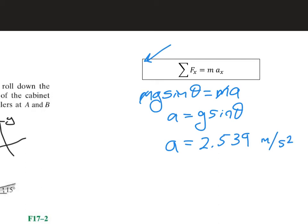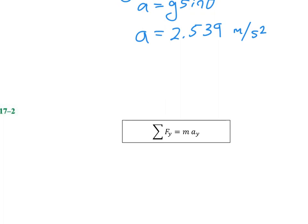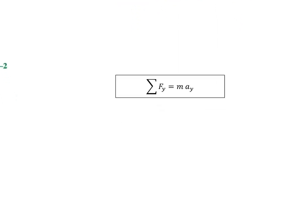Now let's see what's happening in the vertical direction, or I shouldn't say vertical, but we should say the Y direction. And so in this case, we had N A plus N B minus M G cosine theta, and there's no acceleration in the Y direction, because it's not going to just suddenly fly off of the ramp like that.